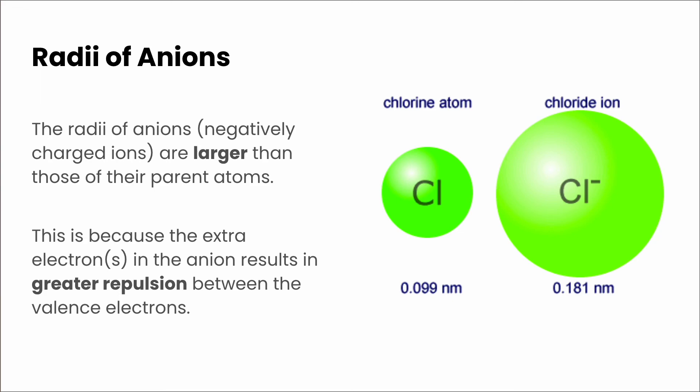All right, so that's it for this video. That's both the atomic radii as well as the ionic radii and their general trends in the periodic table. Now let's move on to our next task.